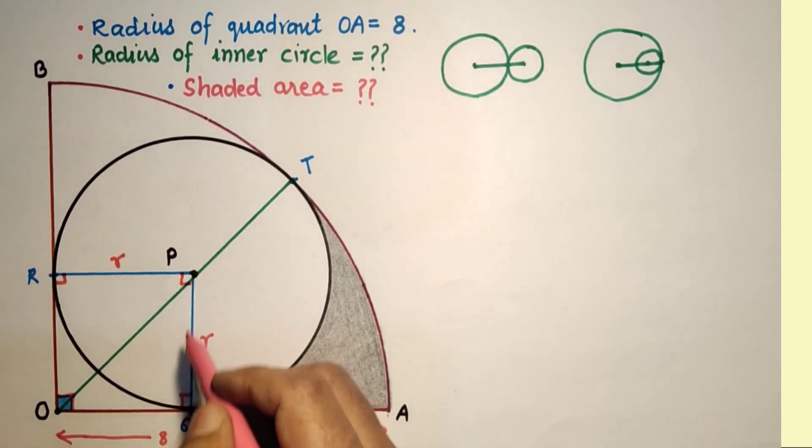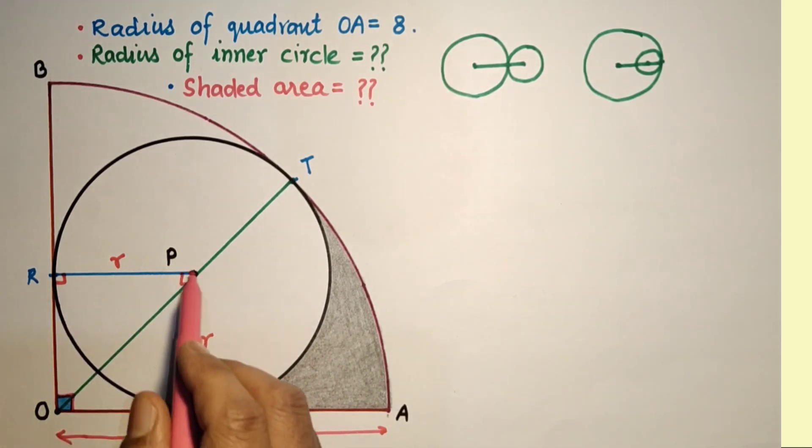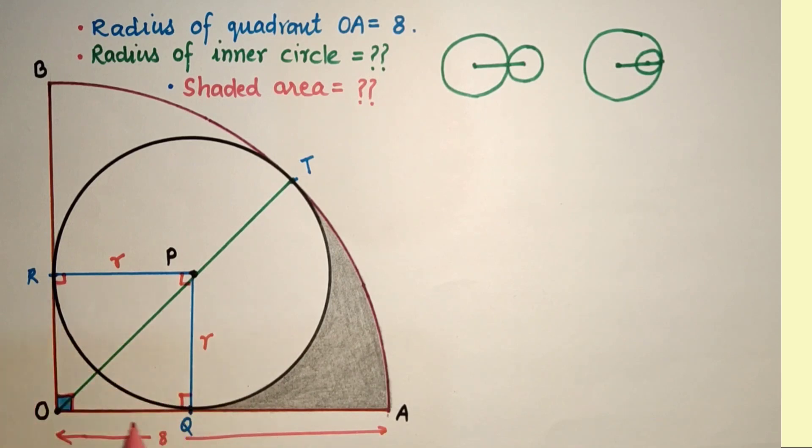Since PQ equals PR and this is a rectangle, and these two adjacent sides are equal, all sides will be equal. So this is also R and this is R.